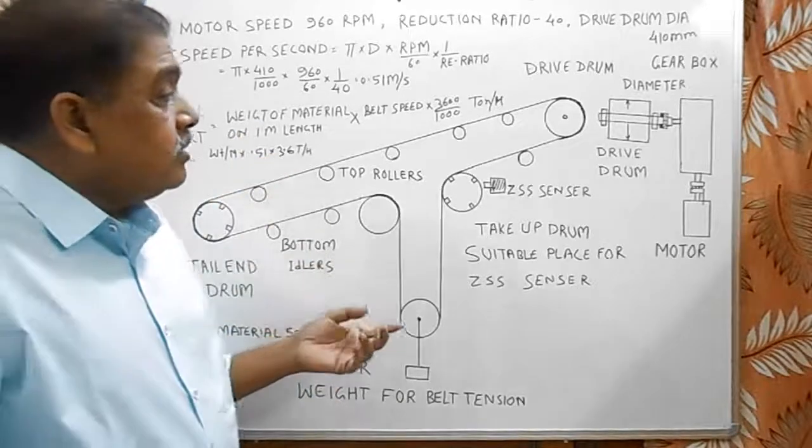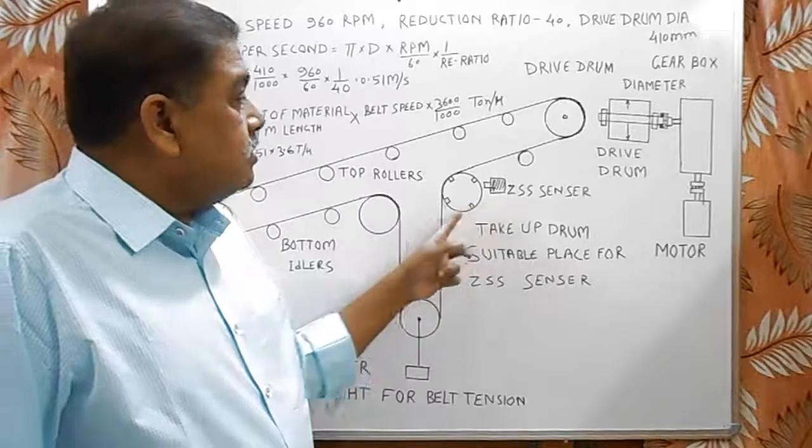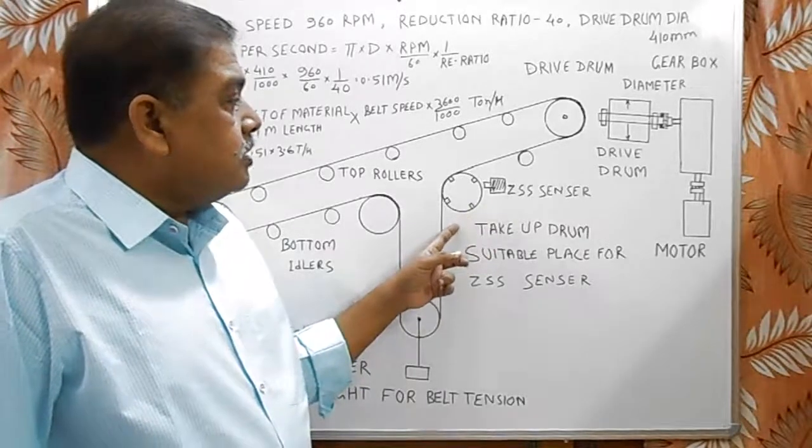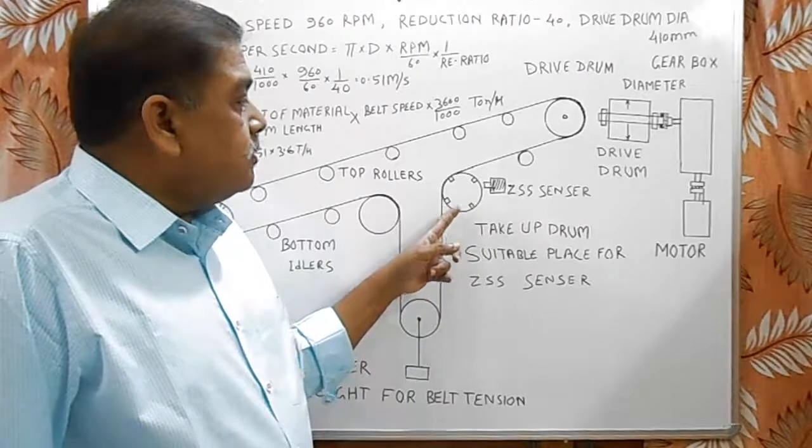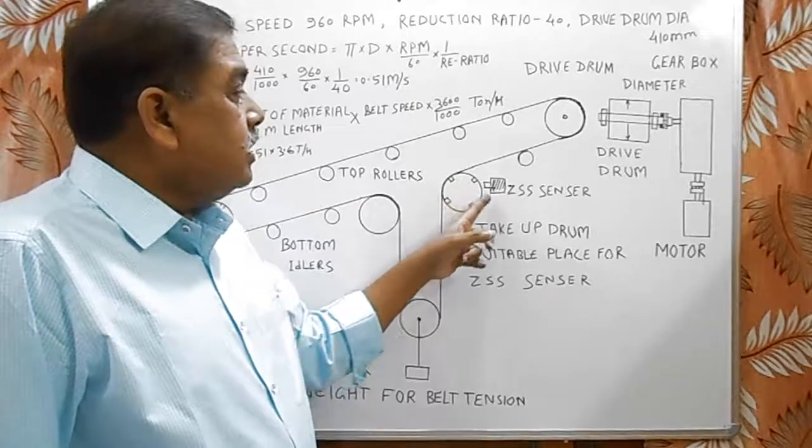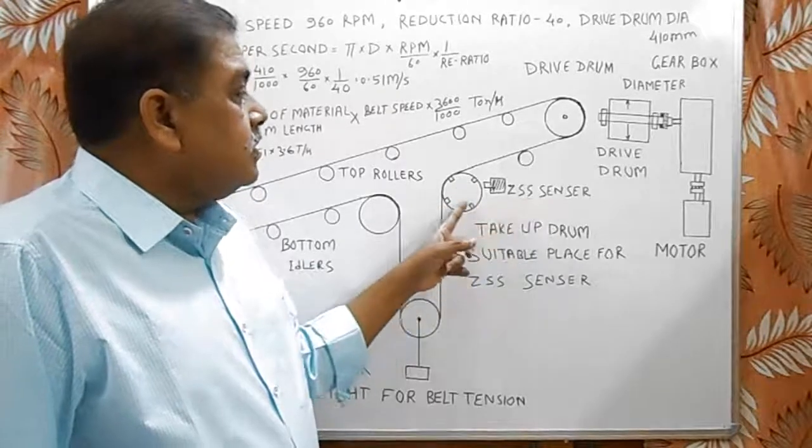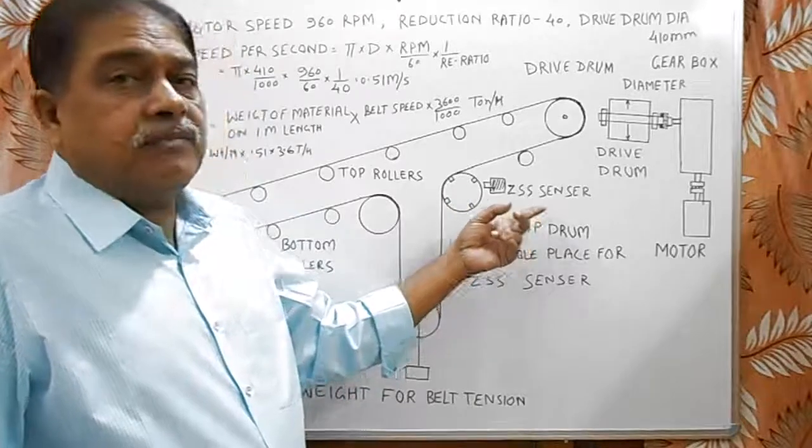In this, for the safety of belt, we use ZSS. The take-up pulley is the best place for fitting ZSS sensor. Here, we put 4 magnetic pieces welded on the drum. And this is ZSS sensor. From here, the wire goes to ZSS controller. And from there, the wire goes to the main interlocking circuit of belt conveyor control circuit.